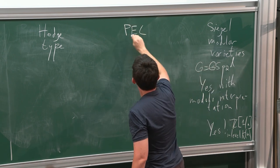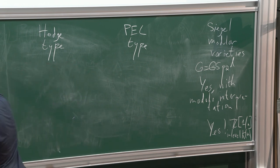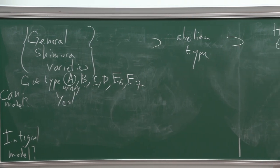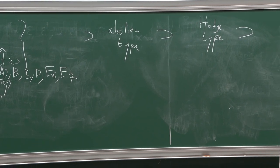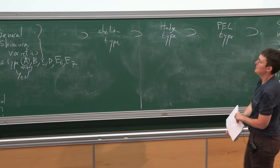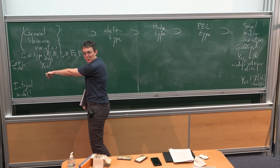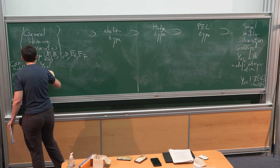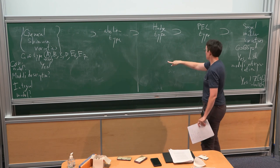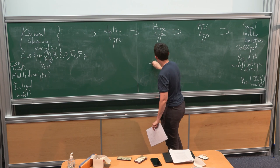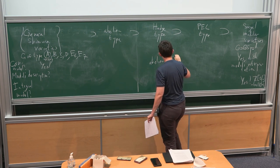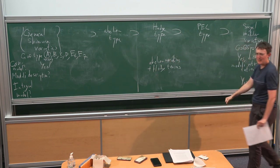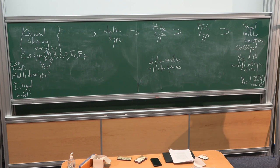We have what we call Hodge type in the middle, then Abelian type, PL type, and then the Siegel modular variety. I'm going to give you a definition of Hodge type. First, let me tell you about the properties. Obviously they all have canonical models. The question is how explicit the canonical model is. For Hodge type, you can write the canonical model as a moduli space of Abelian varieties with some kind of Hodge tensors — so it's explicit. Actually, my knowledge was updated yesterday: I would have said it's not explicit enough to define the integral model, but apparently it is now.